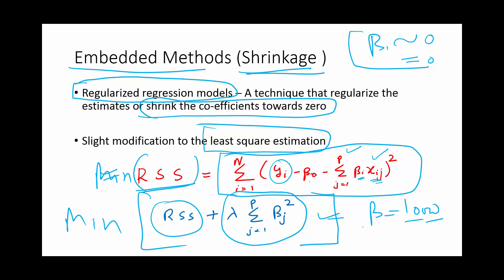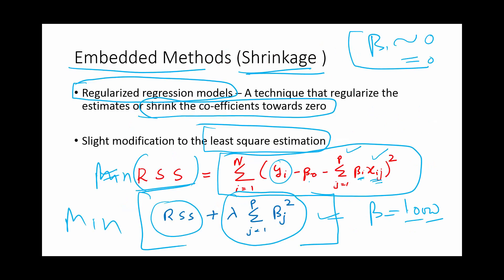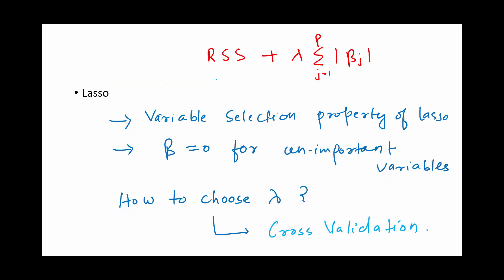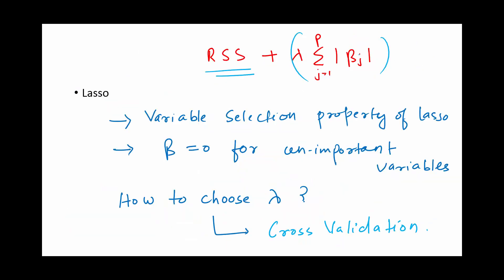There are basically two types of shrinkage methods: lasso and ridge. In ridge, we minimize RSS plus lambda times the summation of the squared beta values. In lasso, we do a slight change — instead of squaring the betas, we take the modulus of the betas. So we minimize RSS plus lambda times the summation of the modulus of betas. Here it is the modulus, and in ridge it is the square of the parameters or coefficients. There is a fundamental difference between the two.